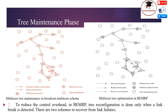In the Pre-maintenance Phase, to reduce control overhead in BEMRP, tree reconfiguration is done only when a link break is detected. There are two schemes to recover from link failure. The first is the broadcast multicast scheme, where the upstream node is responsible for finding a new route to the downstream node. When receiver R3 moves, it gets isolated from the tree; the upstream node I3 floods a broadcast multicast packet with a limited time to live, and R3 sends a reserve packet to rejoin the group.